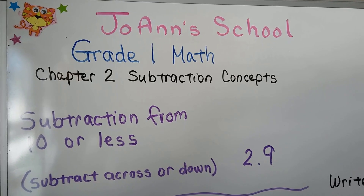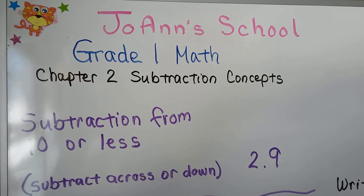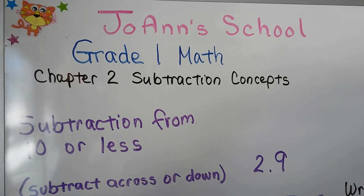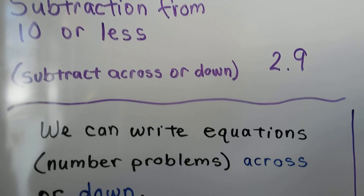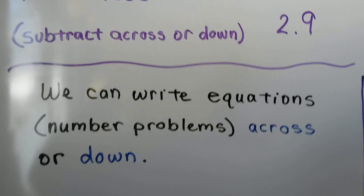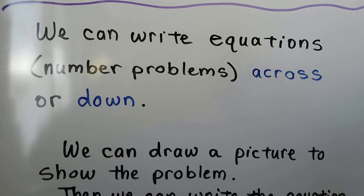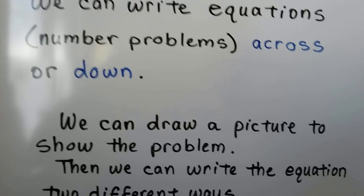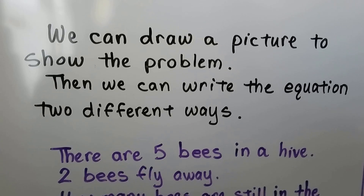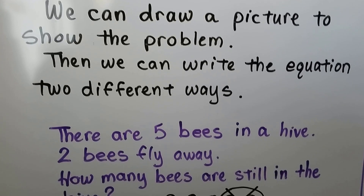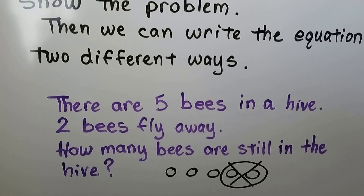Subtraction from 10 or less. We're going to subtract across or down. This is lesson 2.9. We can write equations — those are number problems — across or down. We can draw a picture to show the problem. Then we can write the equation two different ways.